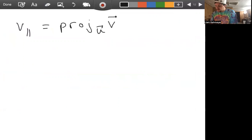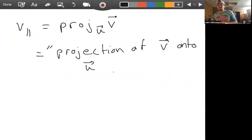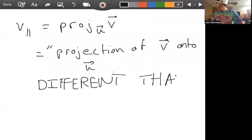And so we call this vector V parallel here, this is the projection of V onto U. And so in words, this is the projection of V onto U. And I always have students get this backwards, and I'm guilty of it myself.